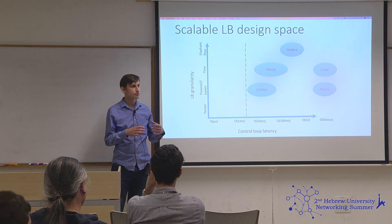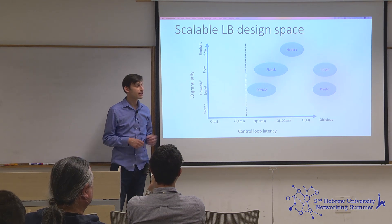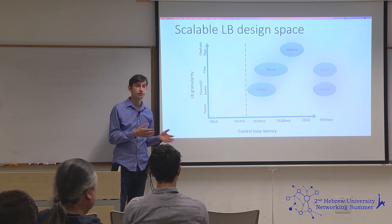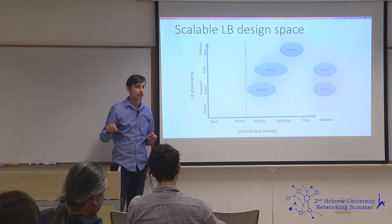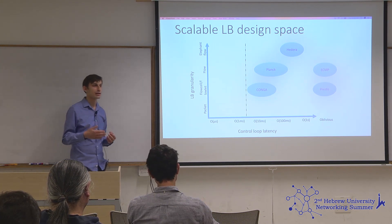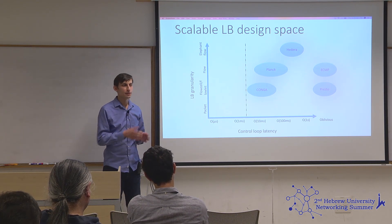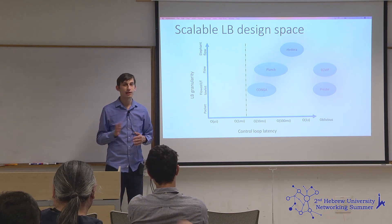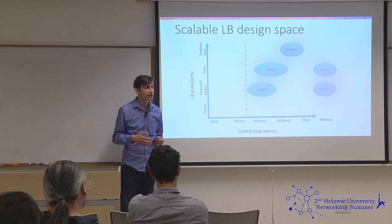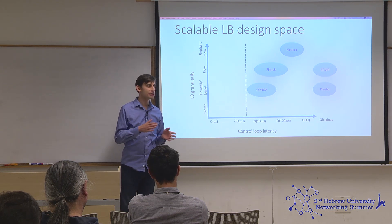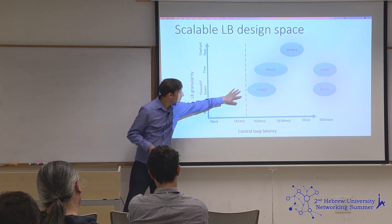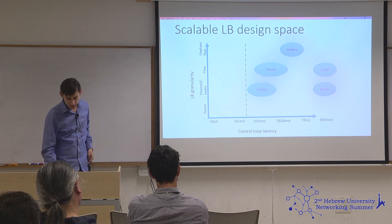In Conga, each switch — the first hop receiving data from the host — monitors end-to-end paths to destinations based on data it's transmitting, piggybacking measurements along with the transmitted data. So it can see what's happening on distinct paths and react. You're still collecting statistics over some period of time, so generally it'll be more than a single RTT, and then it does a bit of computation — possibly sliding slightly in control loop latency, but around there.